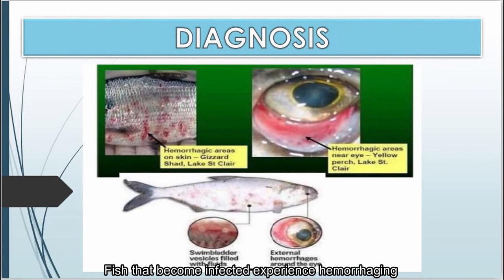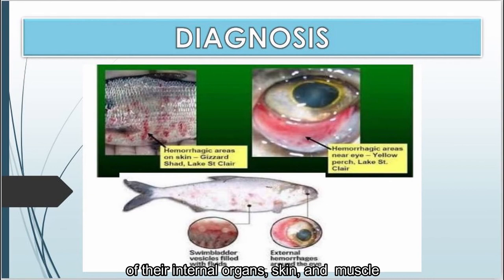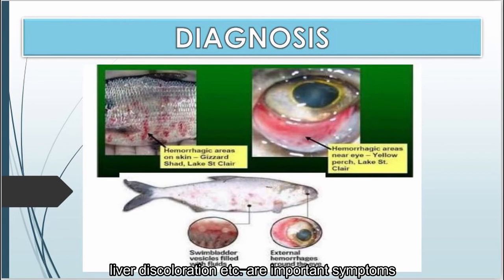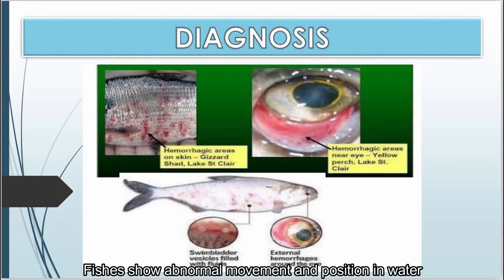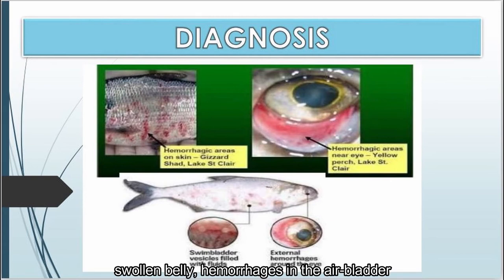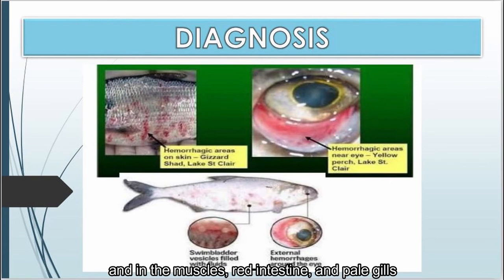Fish that become infected experience hemorrhaging of their internal organs, skin, and muscle. The kidney and liver are the most affected organs. Bleeding in the air bladder, kidney swelling, bleeding in gills and fins, and liver discoloration are important symptoms. Fish show abnormal movement and position in water, swollen eyes, general anemic condition, reduced hemoglobin percentage, swollen belly, hemorrhages in the air bladder and muscles, red intestine, and pale gills.